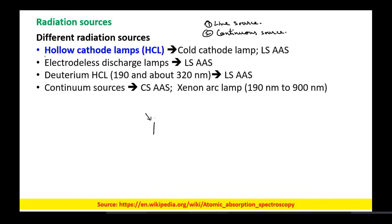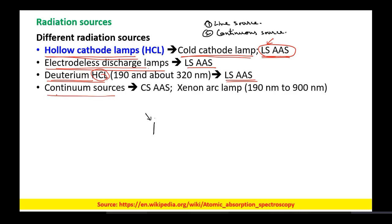The different types of line sources: the first one is the hollow cathode lamp (HCL), used in line source atomic absorption spectroscopy (LSAAS). Similarly, we have electrodeless discharge lamps, also used in LSAAS. Deuterium HCL — holocathode lamp — is also used in LSAAS. Lastly, we have continuum sources — continuous source AAS — using a xenon arc lamp generating electromagnetic radiation in the range of 190 nm to 900 nm.